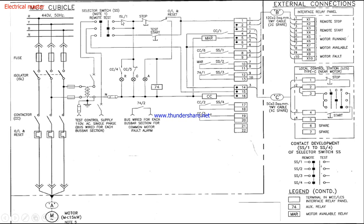So when the selector switch is closed, the power supply is further connected to the stop pushbutton at the local MCC panel. The stop pushbutton is a normally closed (NC) contact. Then this power supply connects to the NC contact of the overload relay. Until the overload relay receives any fault or overload current, this relay remains normally closed. Further, it goes to the terminal block.